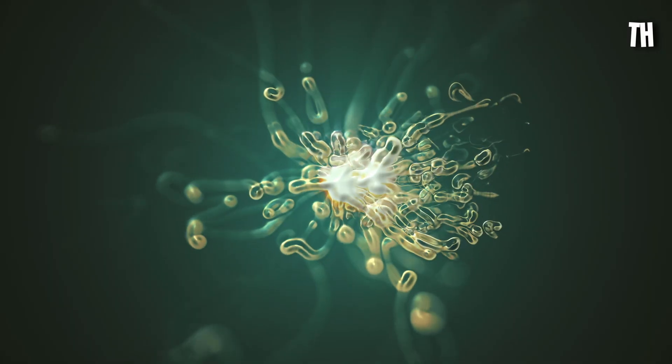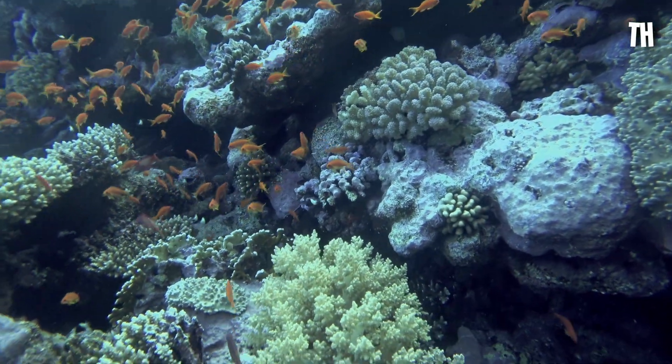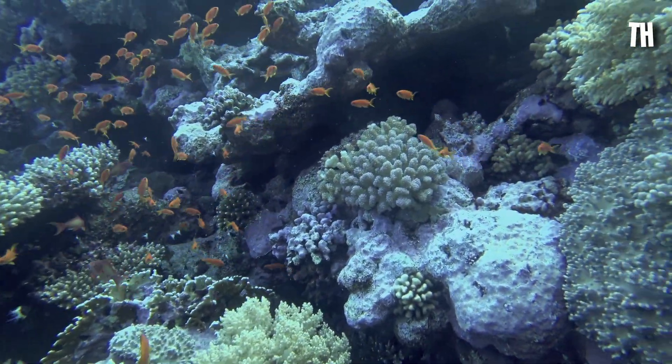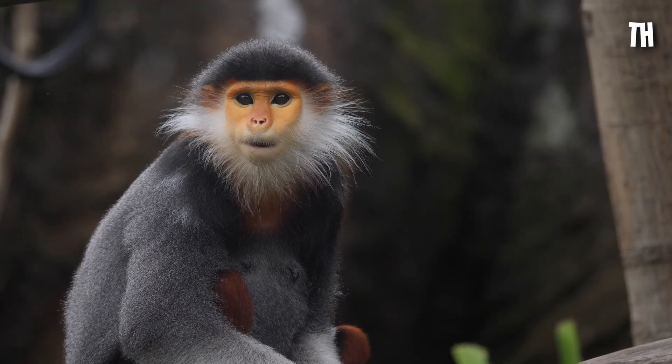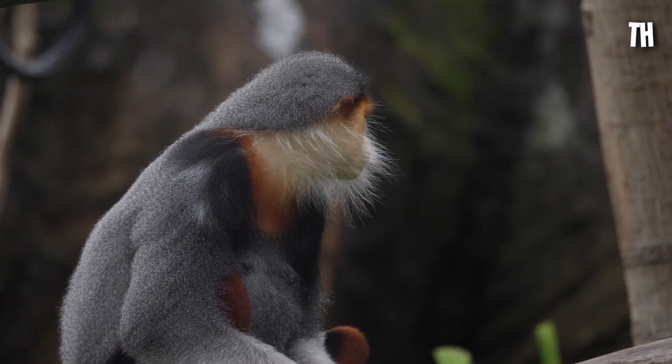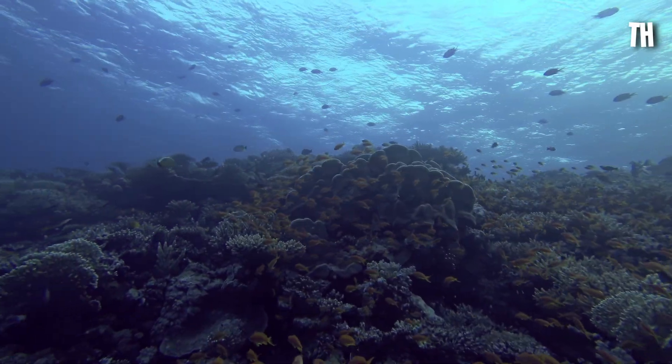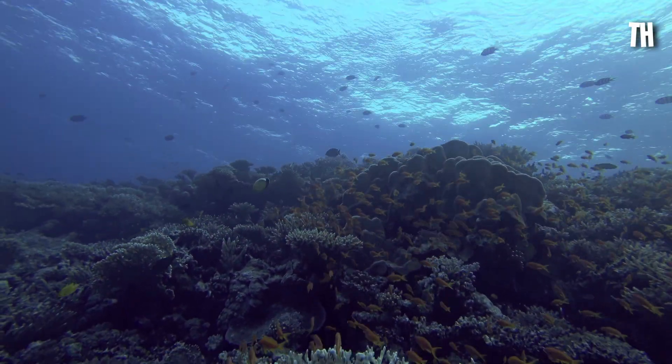As they die, the very base of the marine food chain begins to collapse. Oxygen production, nearly half of what every living being breathes, is thrown into uncertainty. Coral reefs grow pale. Fish populations scatter, disoriented by the sudden change.